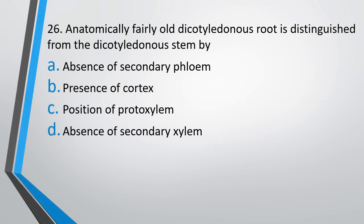Question number 26: Anatomically, a fairly old dicotyledonous root is distinguished from a dicotyledonous stem by — absence of secondary phloem, presence of cortex, position of protoxylem, or absence of secondary xylem. The correct answer is option C — position of protoxylem.